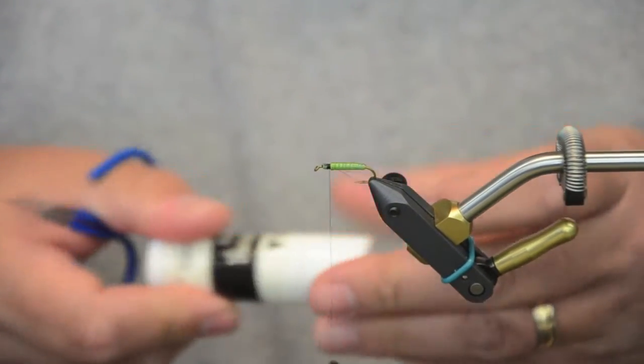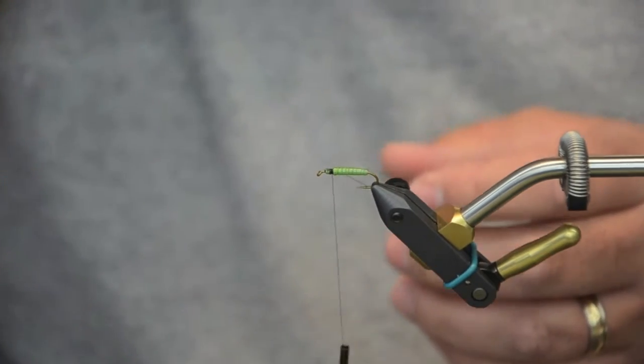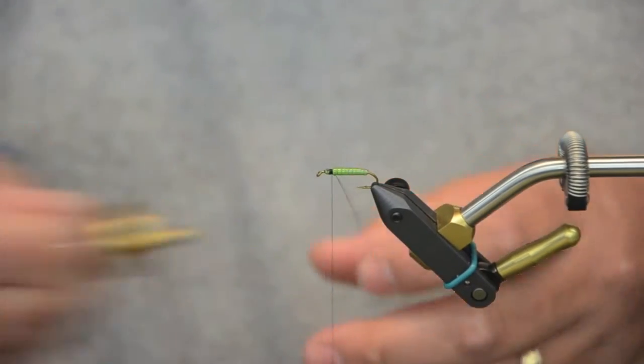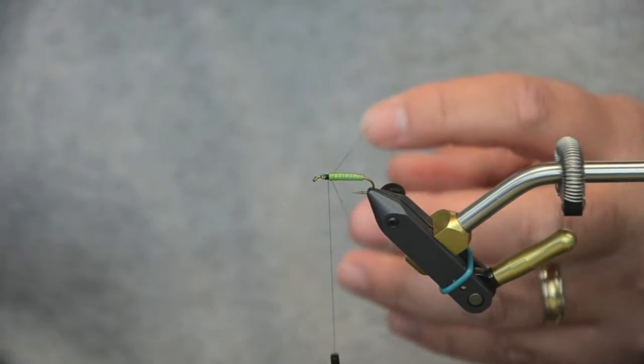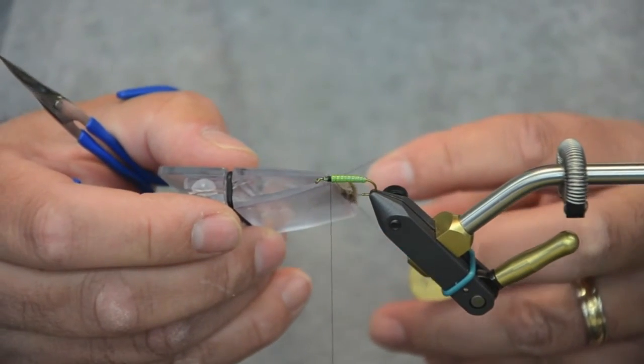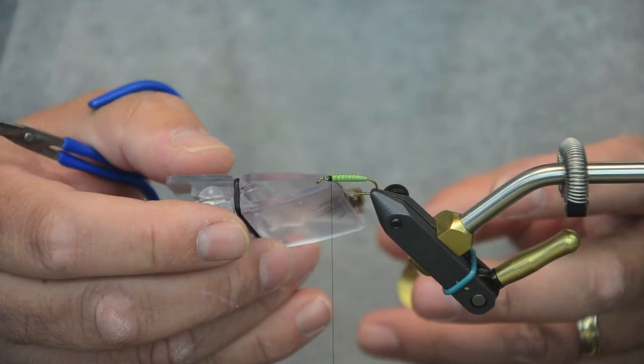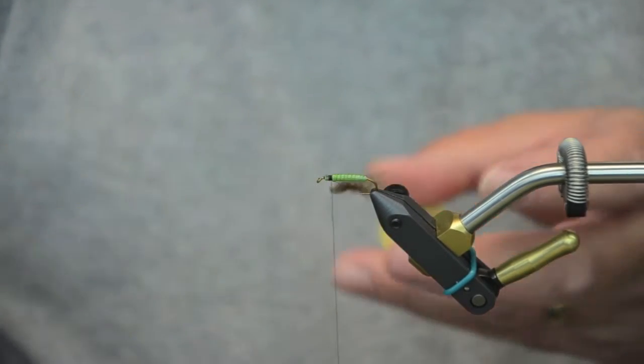This here is BT's dubbing wax and I like it in the tacky. I'm going to use my dubbing whirler here from Hairline. I'm going to lay this material in the loop. Pull the loop tight. Let go.